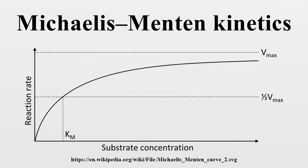Nonetheless, their use can still be found in modern literature. In 1997, Santiago Schnell and Claudio Mendoza suggested a closed-form solution for the time-course kinetics analysis of Michaelis-Menten kinetics, based on the solution of the Lambert-W function. Specifically, where W is the Lambert-W function, and the above equation has been used to estimate Km and Vmax from time-course data.